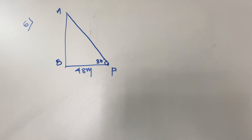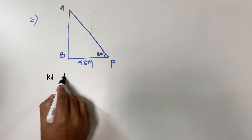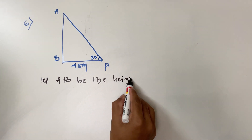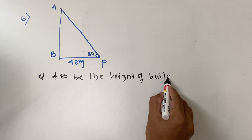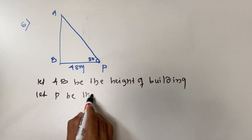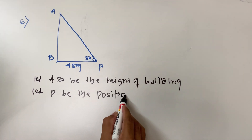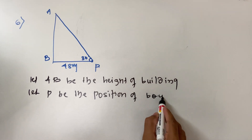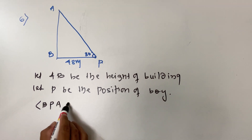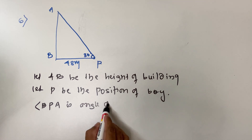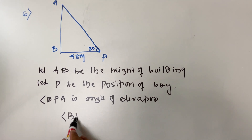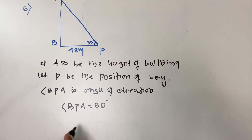For representation, we assume: let A be the top and B be the height of the building. Let P be the position of the boy. The angle PBA — actually angle PPA — is your angle of elevation, and that angle is equal to 30 degrees.